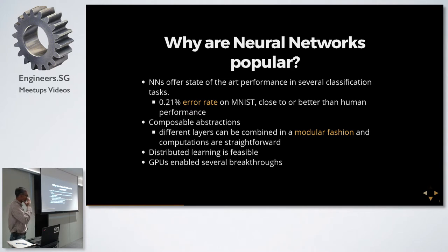Why else? Distributed learning is feasible on neural networks, and thanks to GPUs. Since 2012 GPUs have enabled breakthroughs on big machine learning problems which were not possible when GPUs were not as commonplace.